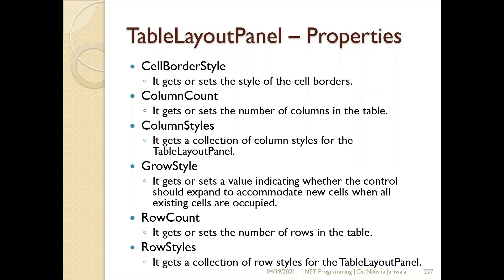Next is row count — how many total number of rows are in this particular table. Next is row style — just like column style, we can set the styles for individual rows. These are the properties of TableLayoutPanel control which are related to rows and columns.